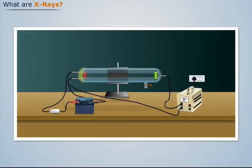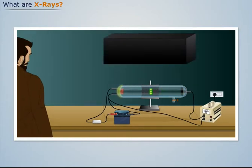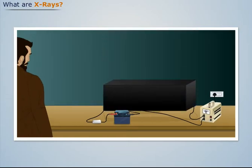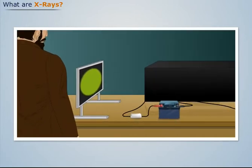He then covered the glass tube with black cardboard and placed a fluorescent screen behind the cathode. He noticed that the fluorescent screen still glowed.